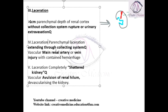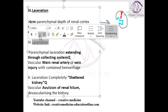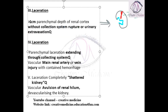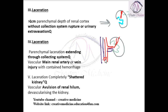Grade 4 is also a laceration. In Grade 4, there is parenchymal laceration extending through the collecting system. There is also major injury to either the main renal artery or vein. Because of this vascular injury, there is hemorrhage, but the hemorrhage or hematoma is contained. So this is Grade 4.